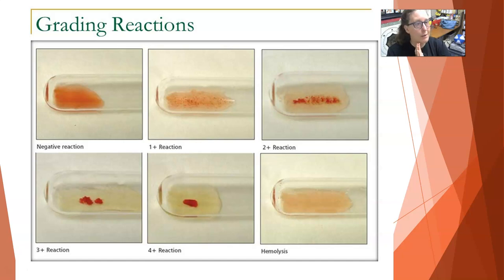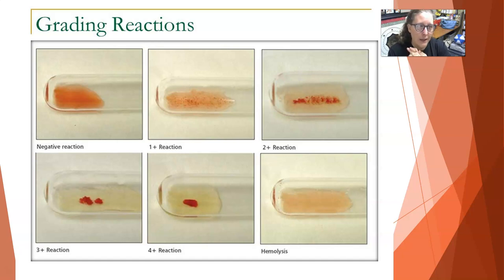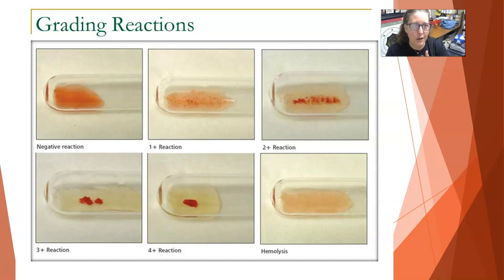That wraps up our type and screen. As a reminder, the type and screen is generally ordered to make sure we have blood on hand and that there are no unexpected antibodies in the event that the patient might need a transfusion. If they do need one, the order must be converted to a type and crossmatch. I'll have more videos coming up — this has been your video on type and screen. Thank you.